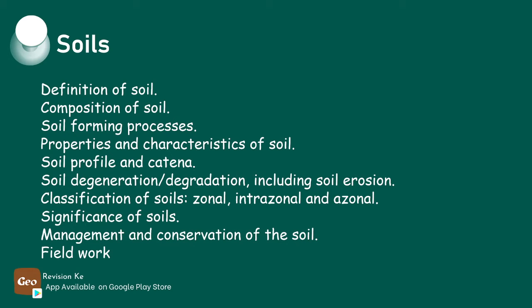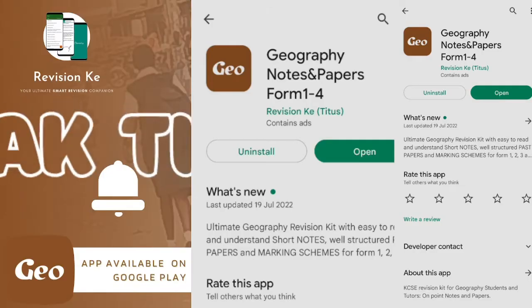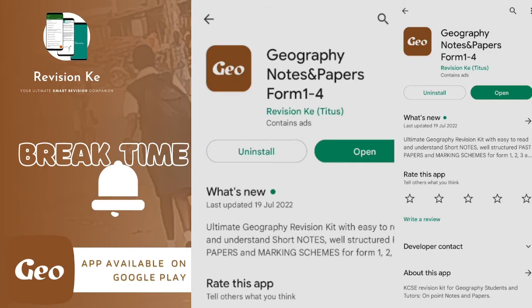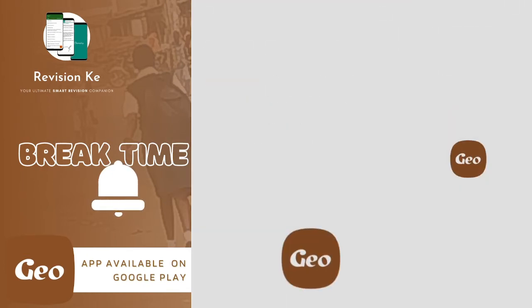We are also supposed to identify the types of soils and their uses within the local environment, and that should be under fieldwork. All these can be done from the geography app, which I'm going to illustrate briefly. On your Google Play Store you'll be able to find it, so we'll open it.